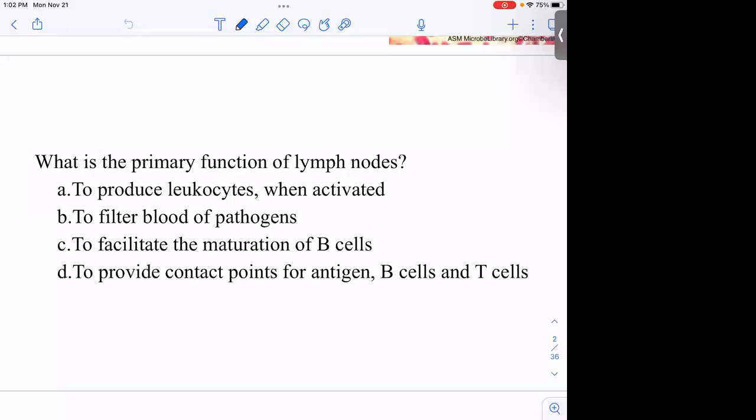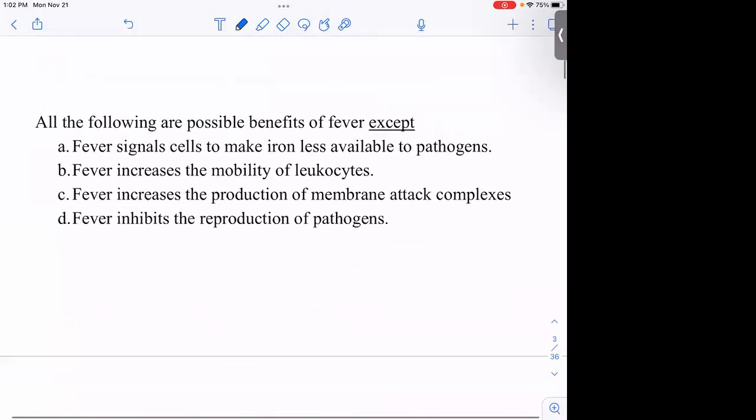Here's some of the five most commonly missed questions. Primary function of lymph nodes - the correct answer was D: to provide contact points for antigen being presented, typically by a macrophage or dendritic cell, to B cells and T cells. The filtering of blood is taking place in the spleen. Spleen filters blood, lymph nodes filter lymph.